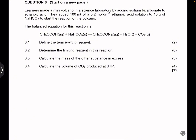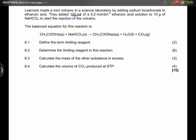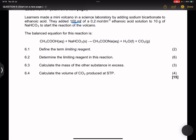This question is based on limiting reagents as well as calculating the volume of a gas. Learners made a mini volcano in a science laboratory by adding sodium bicarbonate to ethanoic acid. They added 100 milliliters of a 0.2 mol/dm³ solution of ethanoic acid to 10 grams of sodium carbonate to start the reaction. The balanced equation for this reaction is given.